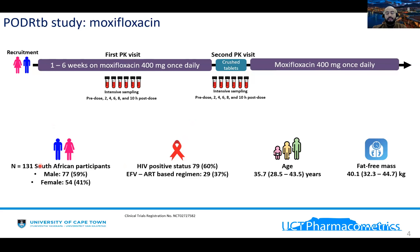These are the overall characteristics of the population included for this study. There were 131 participants, all South African adults, and most of them were male. Of these 131 participants, 79 were HIV positive, and 29 of those HIV-positive participants were on an efavirenz-based antiretroviral treatment regimen. These are the general characteristics for the participants.